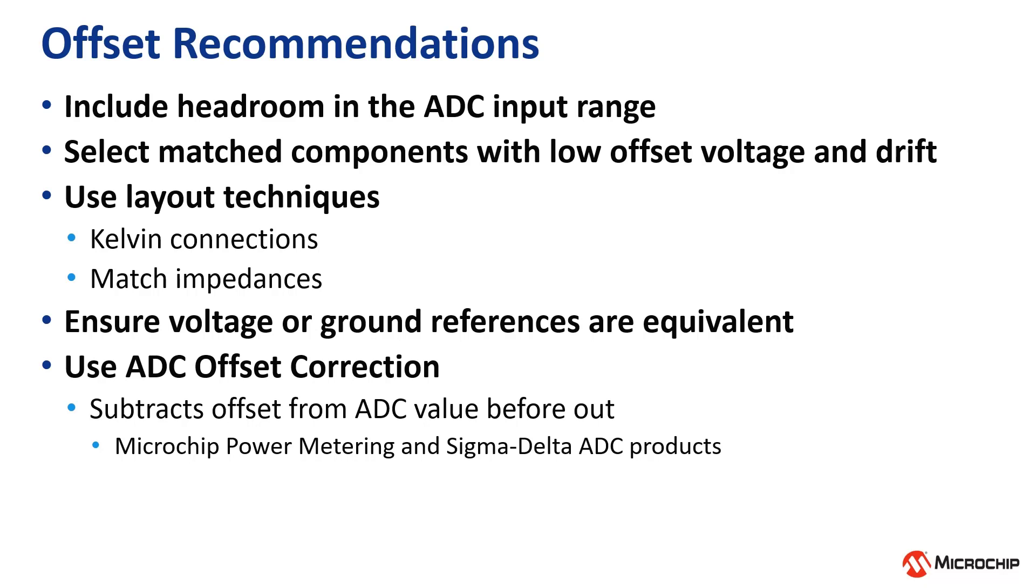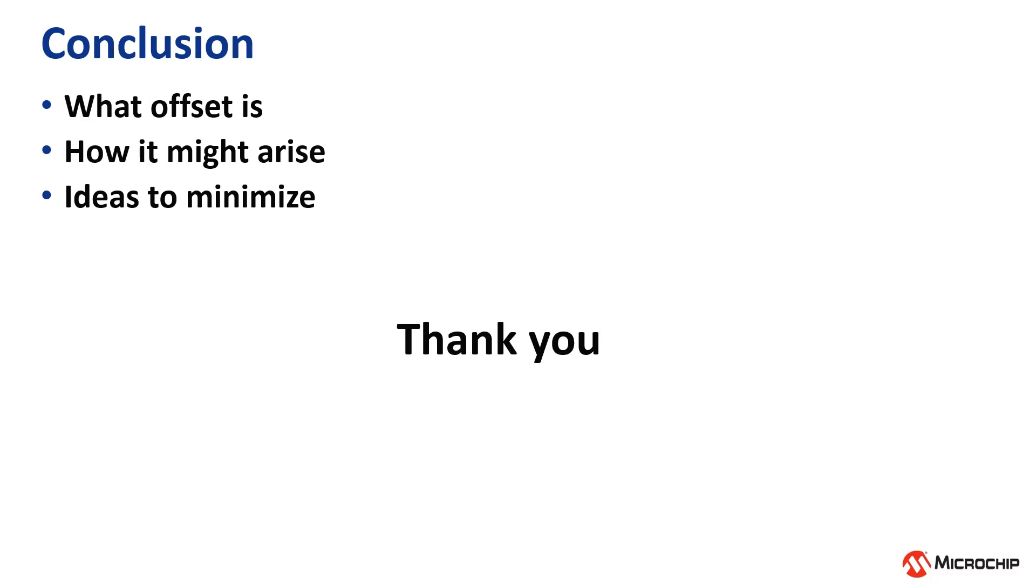For example, several of Microchip's power metering and Sigma Delta ADCs have a digital offset correction that subtracts an offset before the output. These are just a few recommendations. Please come back or check our playlist for more information on offset correction or calibration. I hope this video has given you insight into what offset is, how it might arise, and some ideas to minimize the impact of this error. Thank you.